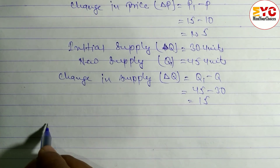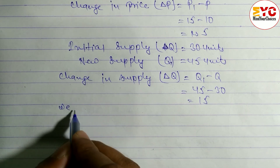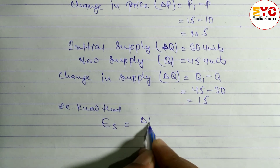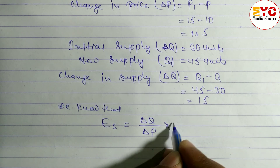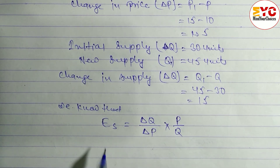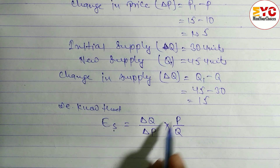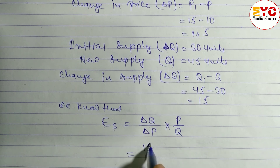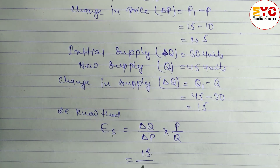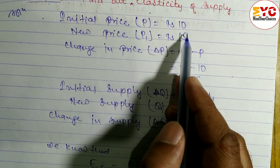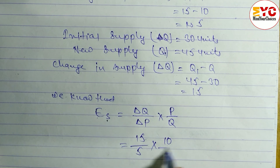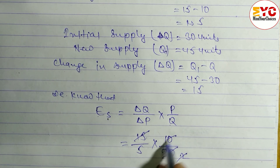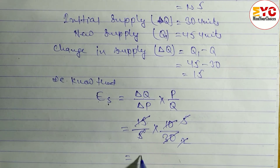Now we find price elasticity of supply using the formula: Es = (Δq / Δp) × (p / q). Substituting values: Δq is 15, Δp is 5, initial price p is 10, and initial quantity q is 30. So Es = (15/5) × (10/30) = 3 × (1/3) = 1. Price elasticity of supply is equal to 1.